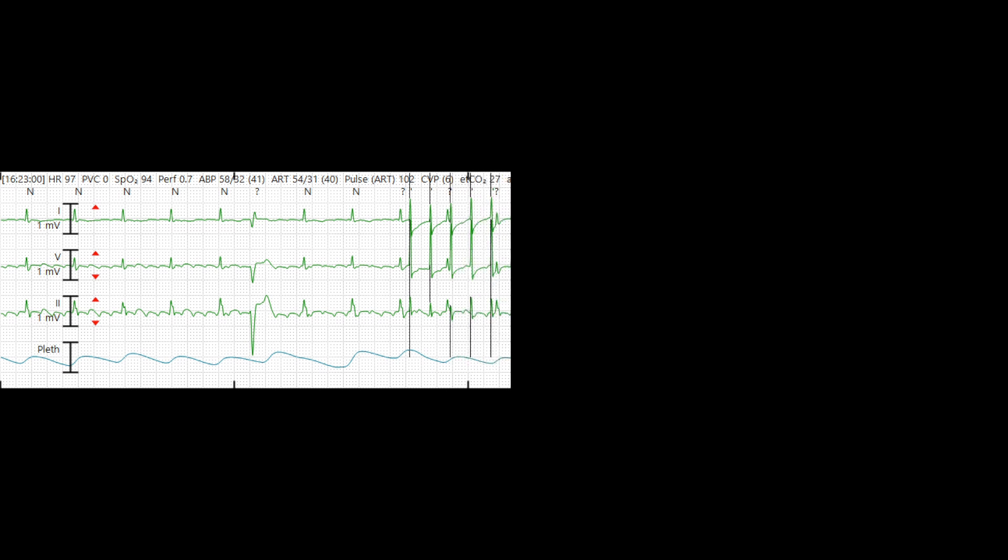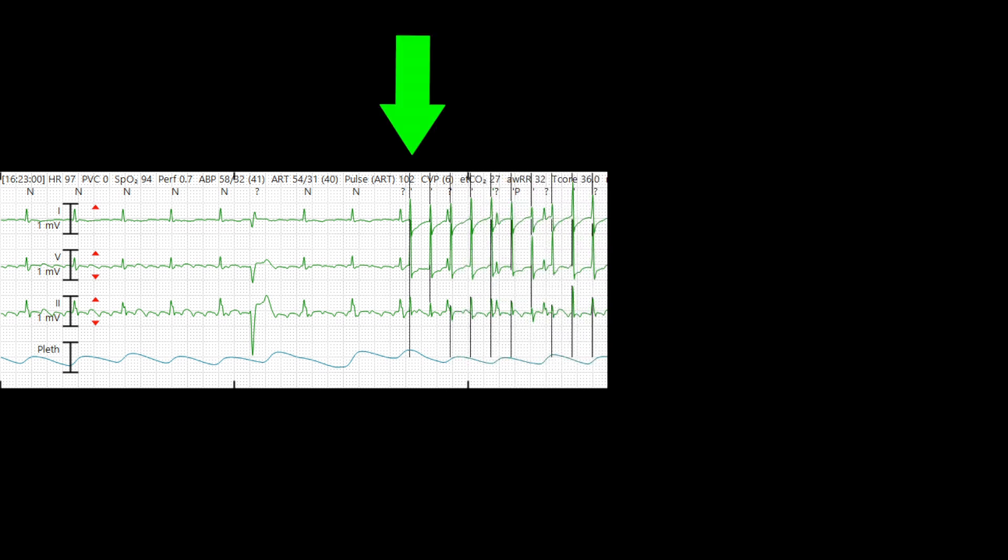This patient has atrial flutter with an atrial rate of about 300. This patient also has heart block with a junctional escape rhythm around 100. Here they are being atrially paced at a rate slightly less than 300, as seen by the black pacer spikes.